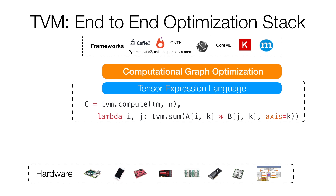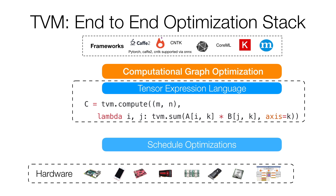What we want instead is a lower-level representation that gives us expressivity and the ability to automatically lower those programs onto hardware. We choose a second level of representation, which we call the tensor expression language, that allows you to describe the mathematical formula of how you want to compute your computation. For example, this is how you can compute dot product or matrix multiplication — specifically transpose matrix multiplication. To bridge the gap from this tensor expression language to hardware, we adopt an existing concept from programming languages called schedule optimization.